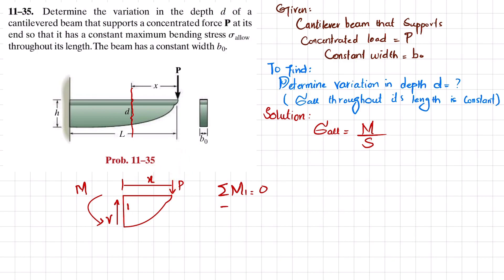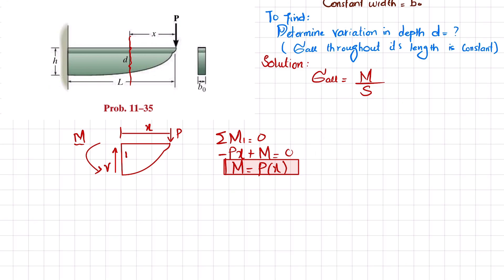About point one, the moment due to P into perpendicular distance x is clockwise, so it will be negative. So minus P times x plus the external moment equals zero. Therefore moment M is equal to P times x.